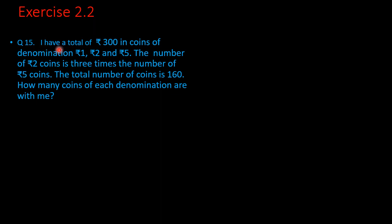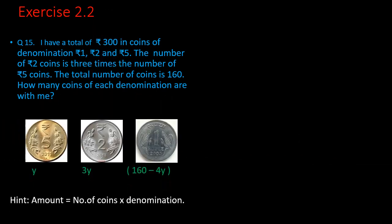Question number 15. I have a total of rupees 300 in coins of denomination rupees 1, rupees 2 and rupees 5. The number of rupees 2 coins is 3 times the number of rupees 5 coins. The total number of coins is 160. How many coins of each denomination are with me? After reading the question, we have to find the number of coins of each denomination. We have to find which coin we have less in number to take as y.